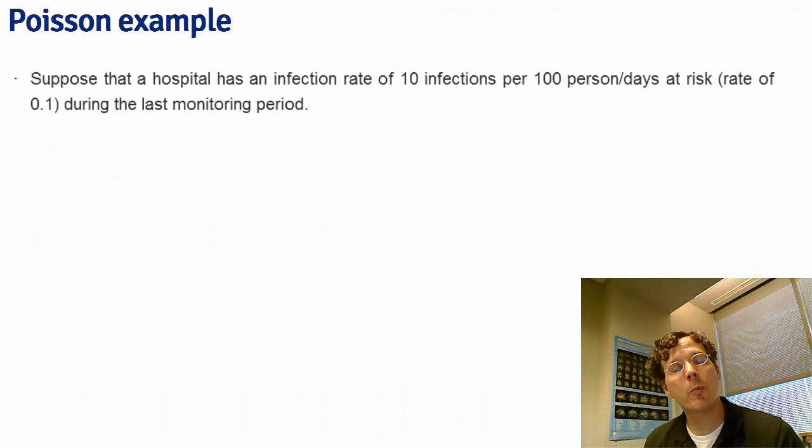Let's go through a Poisson example. Suppose a hospital has an infection rate of 10 infections per 100 person days at risk for a rate of 0.1 infections per person day at risk during their last monitoring period.